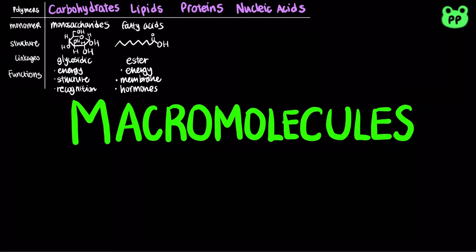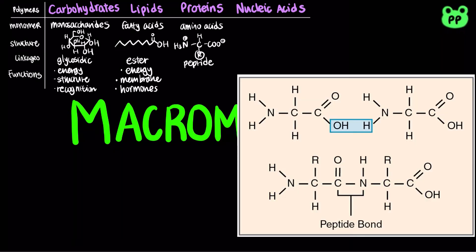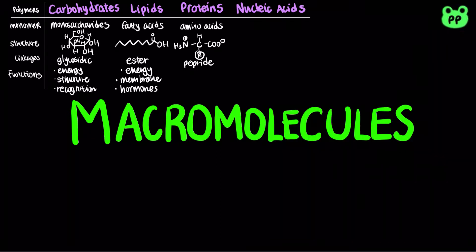Lipids function in energy storage, membrane structure, and acting as hormones. Proteins account for more than 50% of the dry mass of most cells. They are made of monomers known as amino acids, which consist of a central carbon connected to a hydrogen atom, a carboxyl group, and an R-group sidechain that differentiates each amino acid.